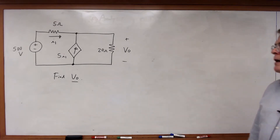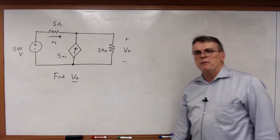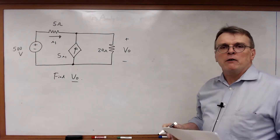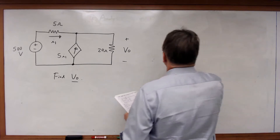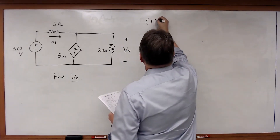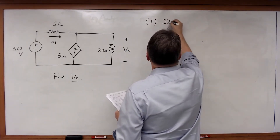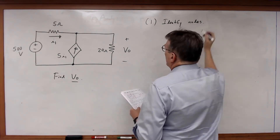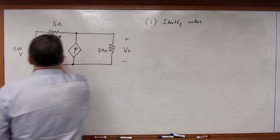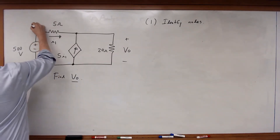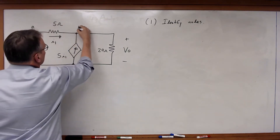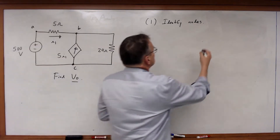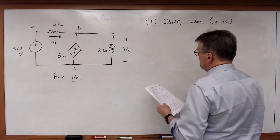We're going to calculate V sub O. Let's write our equations. First, let's identify all our nodes. I've got a node here I'll call A, a node here I'll call B, and the node on the bottom I'll call C. So I've defined nodes A through C.